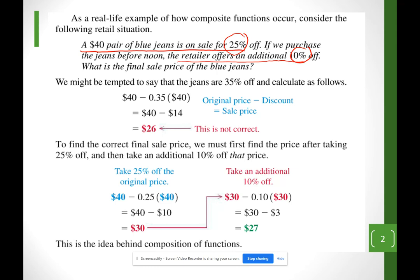If we assumed 35% off a $40 item: $40 minus $14 equals $26. But doing it correctly: $40 minus 25% gives us $30, then from the $30 we take away 10%, which is $3 off, giving us $27.